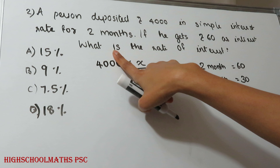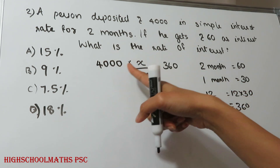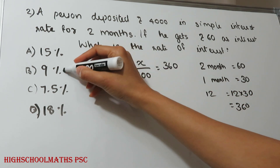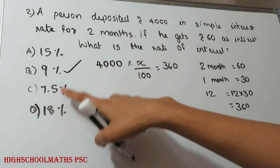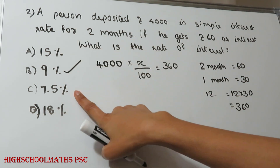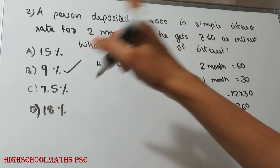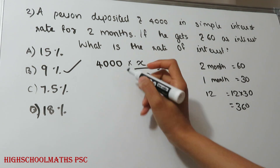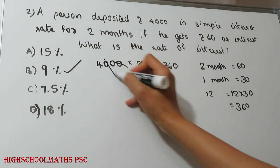In the case of simple interest, if you want to find the option, it's not 90. Let's check — the answer comes out to 90.